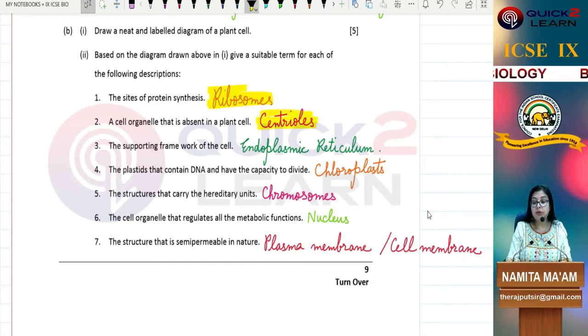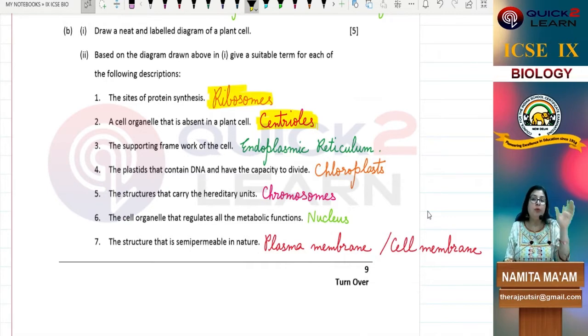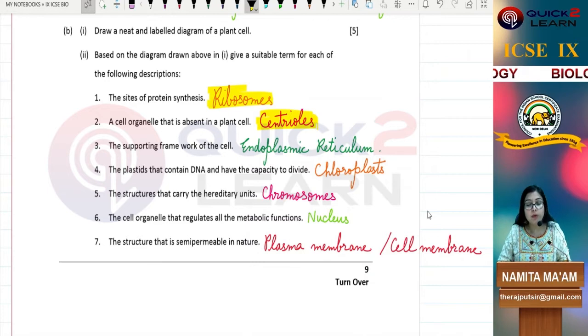Centrosome is absent in plant cells. It is present in animal cells. In the plant cell, centrosomes are not developed. Next is the supporting framework of the cell. Like our bones are our framework which gives shape to our body, what happens in the cell? Endoplasmic reticulum, which is a network of pipes which supply nutrients to the whole cell. Endoplasmic reticulum is the supporting framework of the cell.